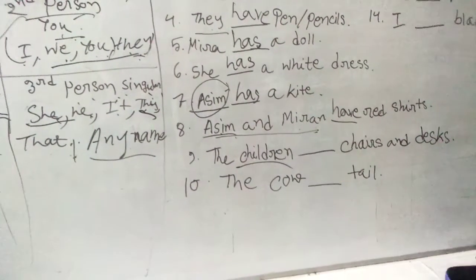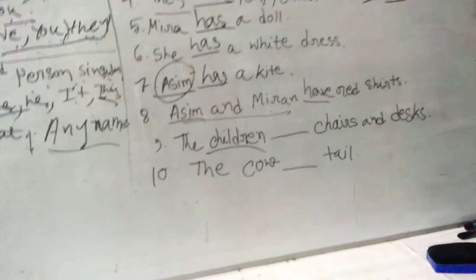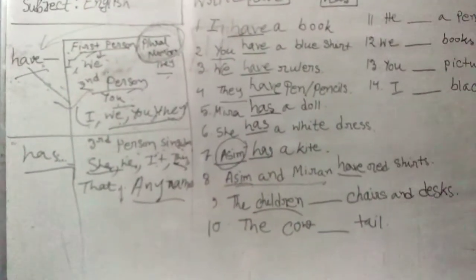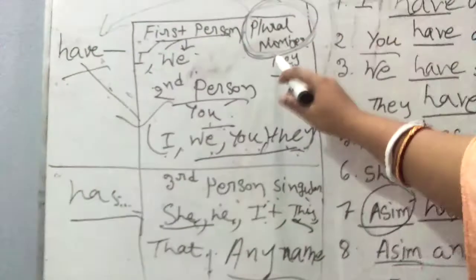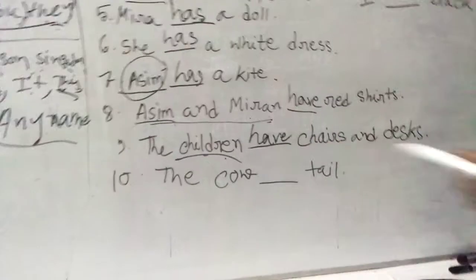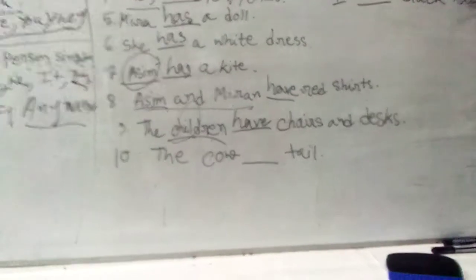Number nine: 'The children ___ chairs and desks.' Children means so many kids together. 'Child' is singular and 'children' is plural. For plural number we use 'have': the children have chairs and desks. What if it were just 'child'? Then we'd use 'has' because 'child' is a third person singular number — only one child. More than one, use 'have'.